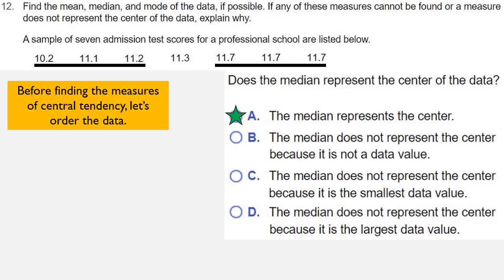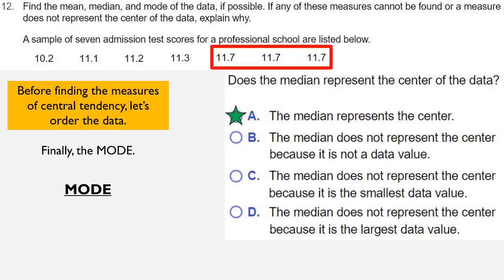Finally, we turn our attention to the mode. The mode, remember, is the most frequently occurring data value. So if we look at these data values and try to figure out which one happens the most, it's going to be the 11.7. And so 11.7 is our mode.